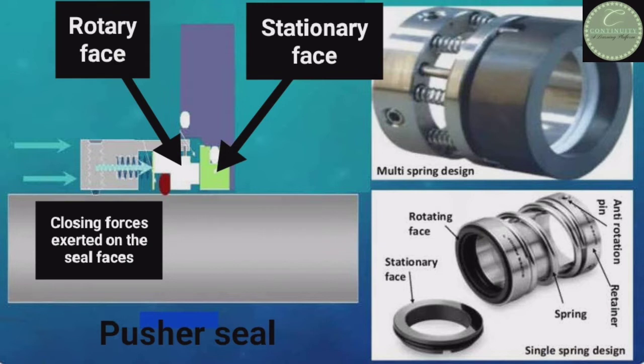This type of seal is used for low temperature and light liquid services such as ethylene, propane, methane, and butane. Looking at this figure, these are pusher seals. The main identification of a pusher seal is that it has a spring — if a seal has a spring or multiple springs, it is a pusher seal.